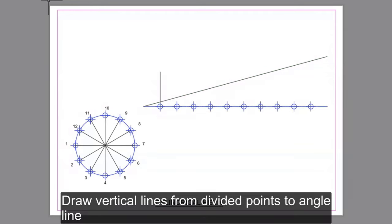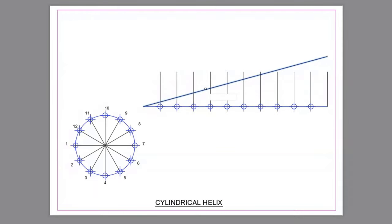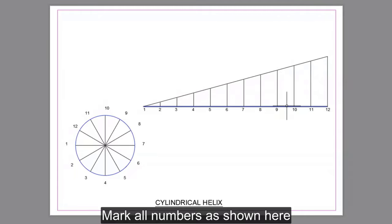Draw vertical lines from divided points to angle line. Mark all numbers as shown here.